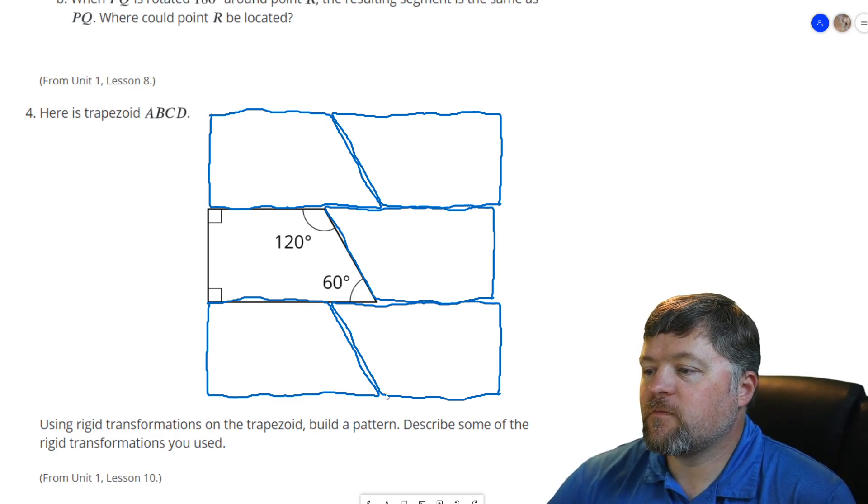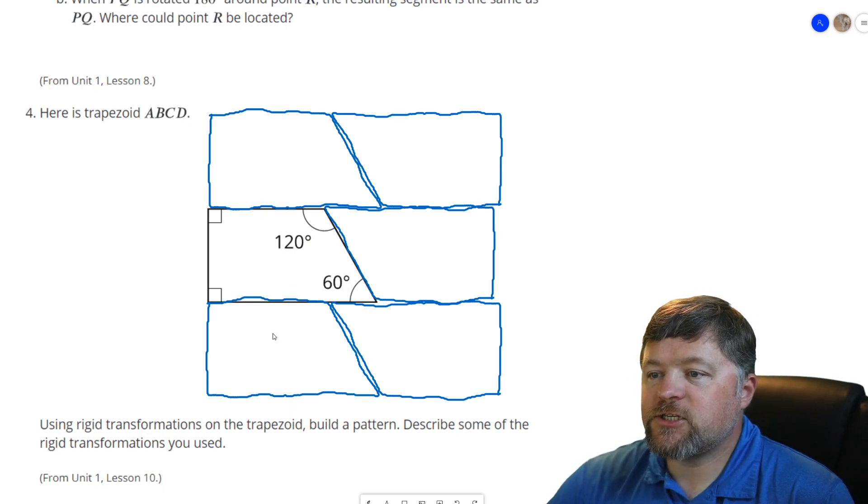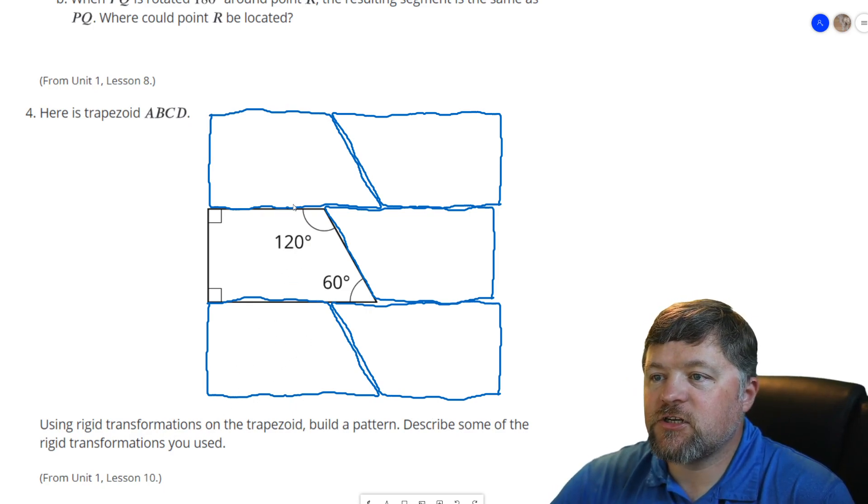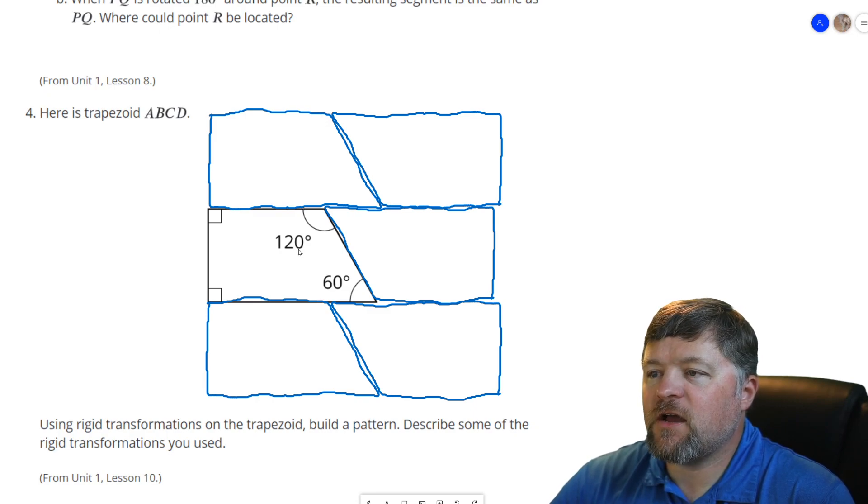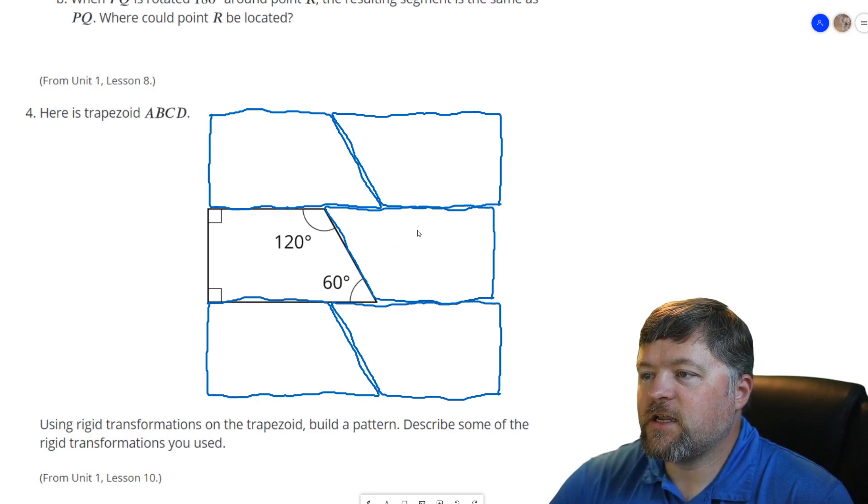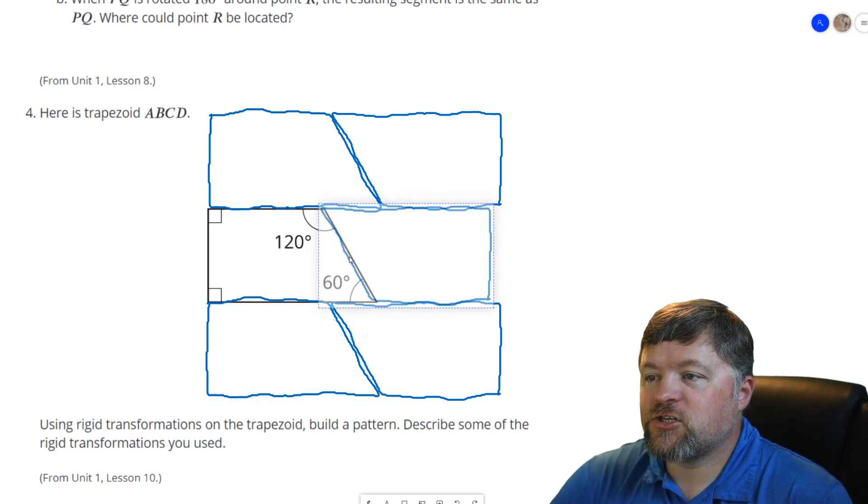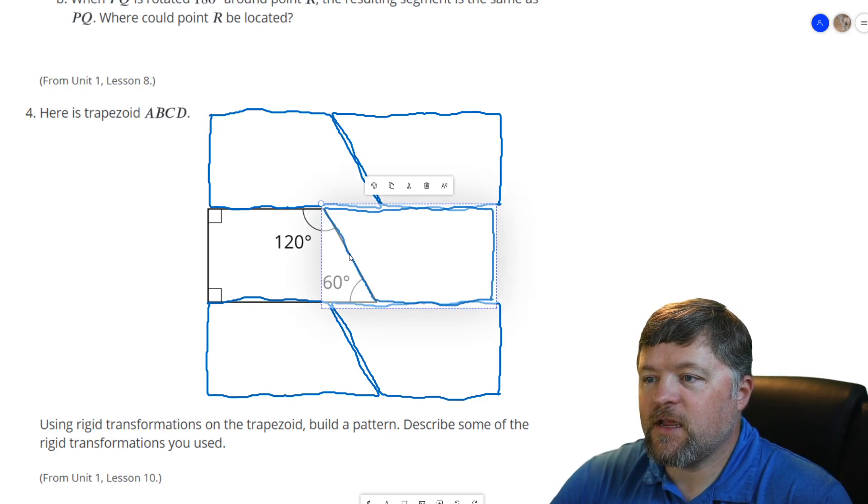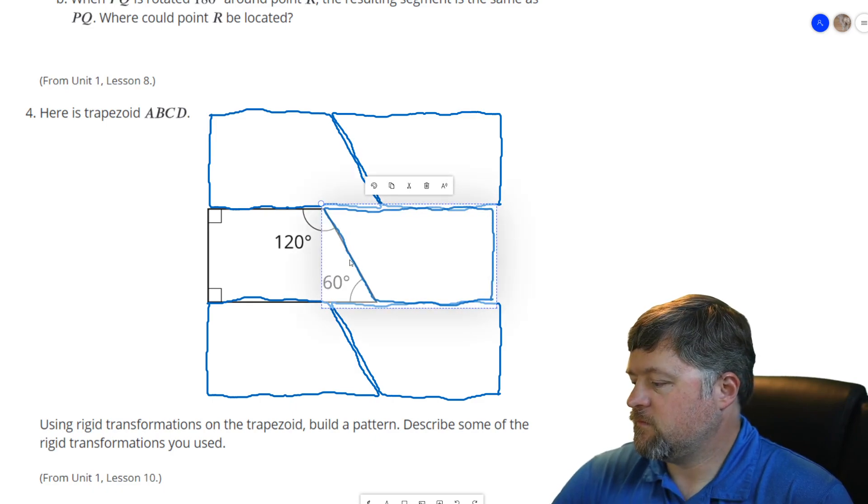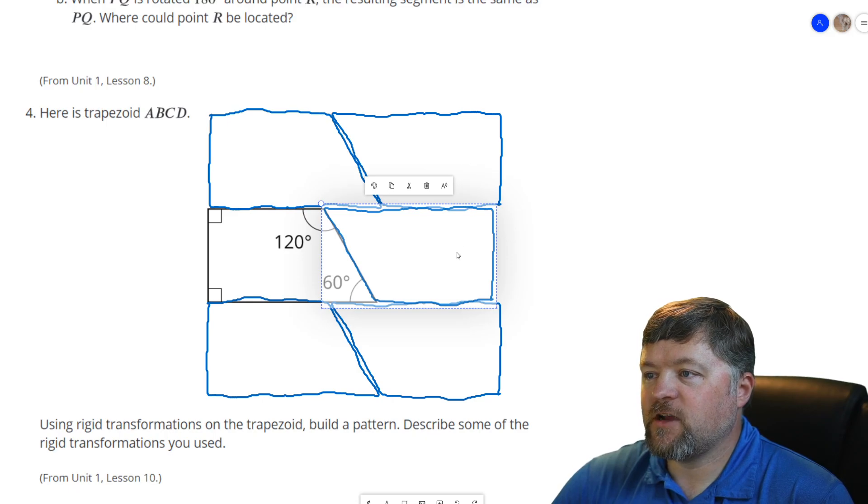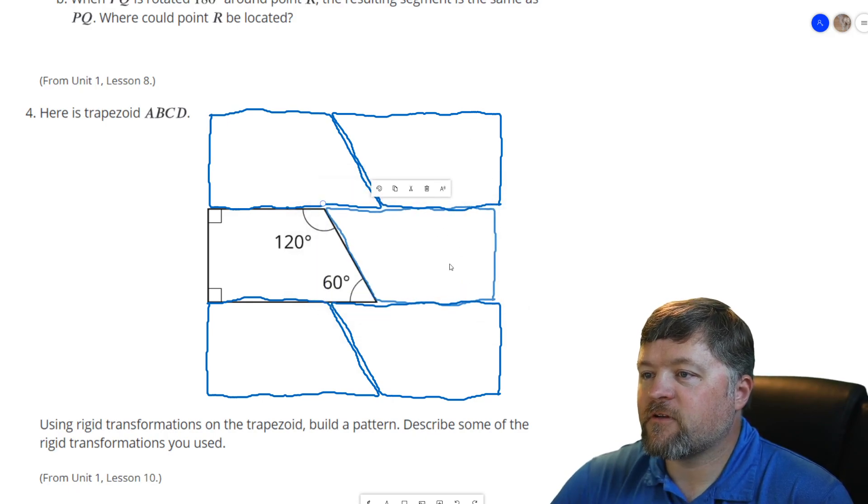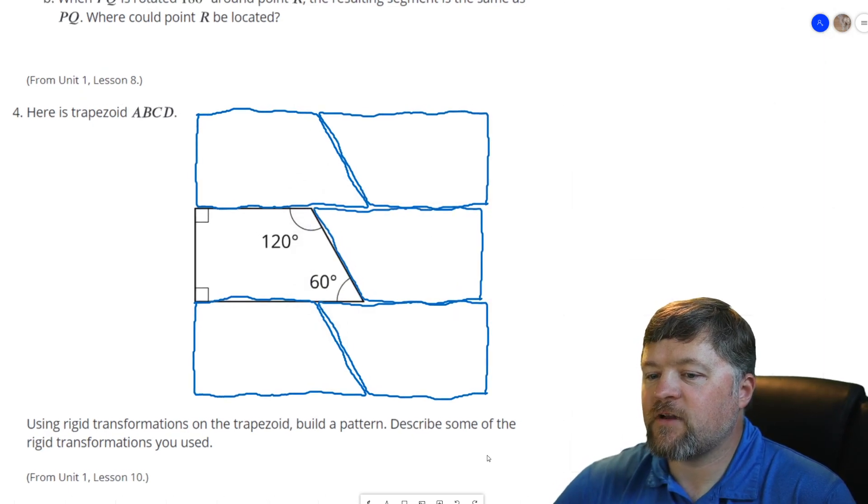Describe some of your rigid transformations. This one is just a translation down, this one here is a translation up. This one here is a 180 degree rotation around this point right here. And then this one is a translation up after that, this would be a translation down after that.